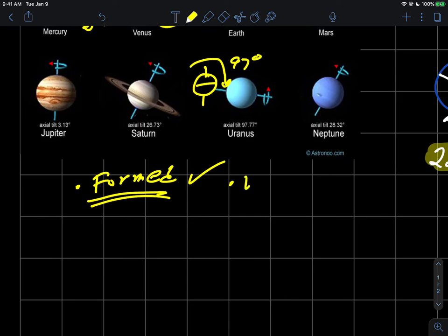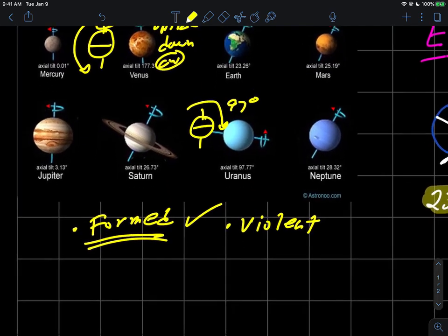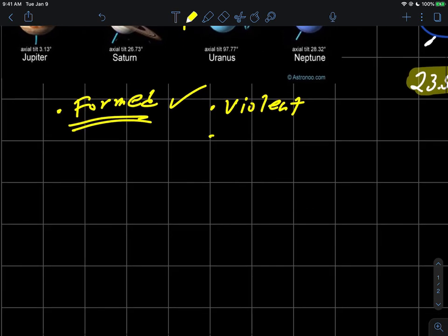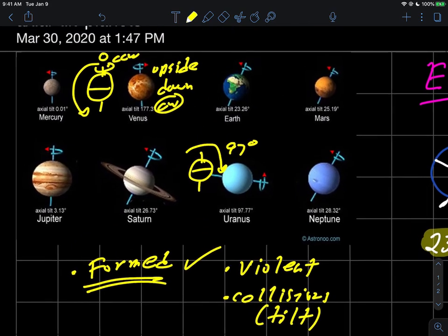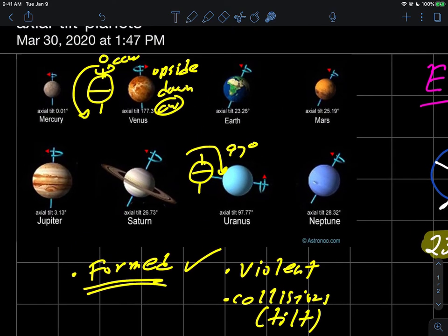Most likely the early days of the solar system were very violent and that these tilts likely came from giant collisions. That's probably where these tilts came from and the picture seems consistent with that.